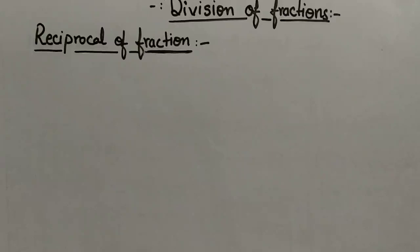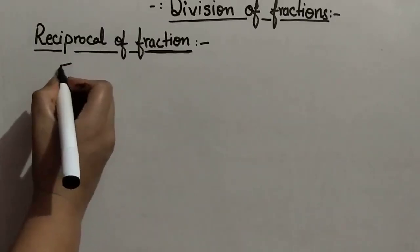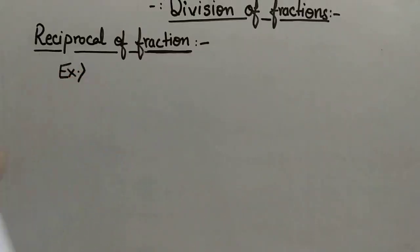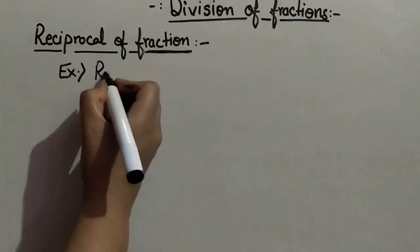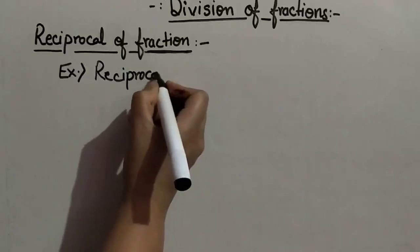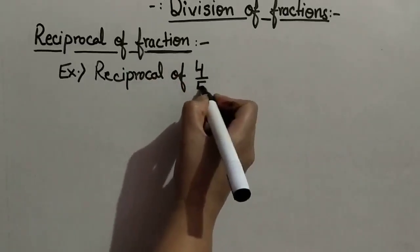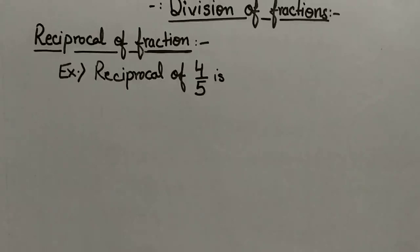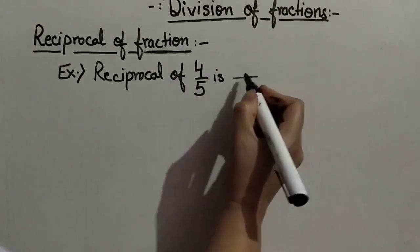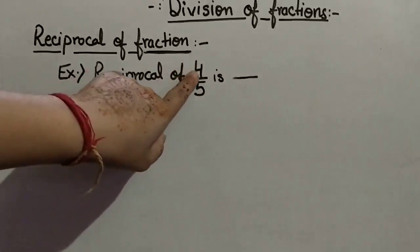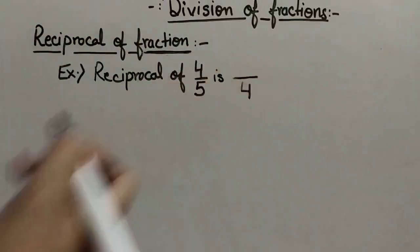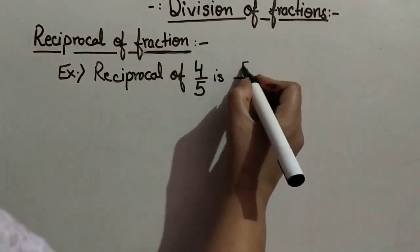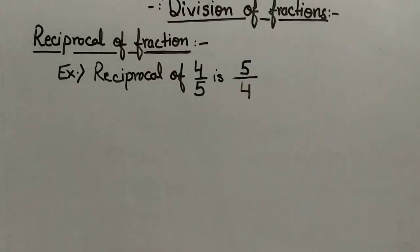Let us see some examples for reciprocal of fractions. The reciprocal of 4 upon 5: we invert the fraction, writing the numerator in place of denominator and the denominator in place of numerator. So, the reciprocal of 4 upon 5 is 5 upon 4.